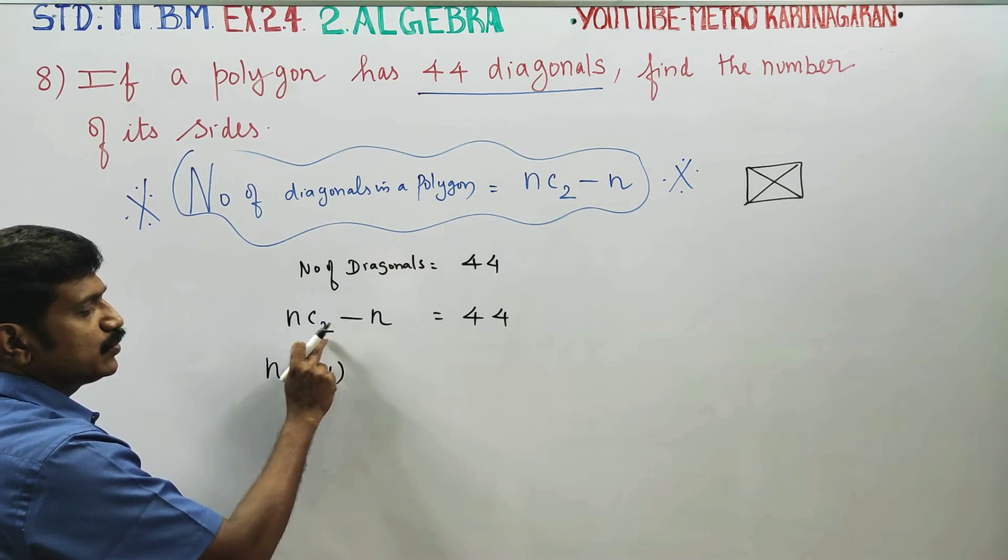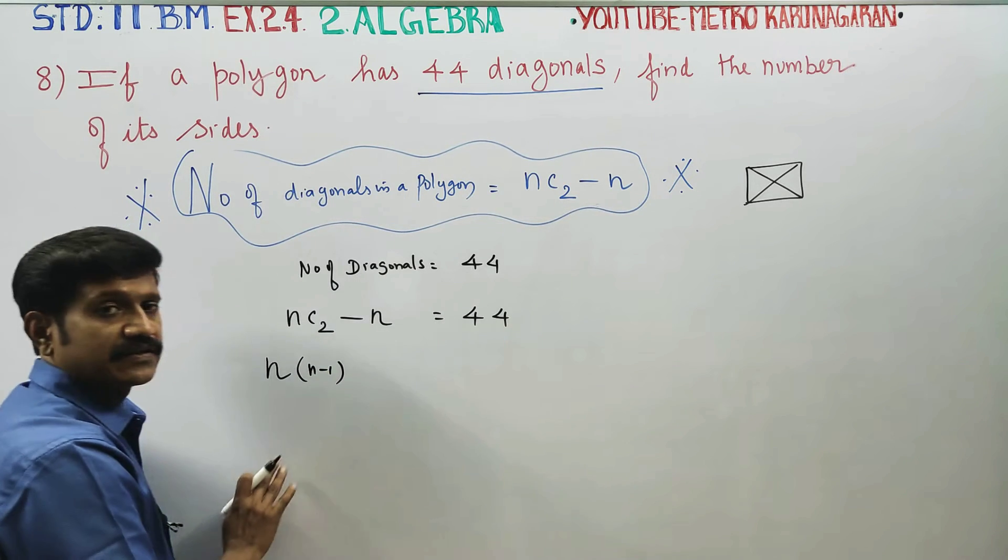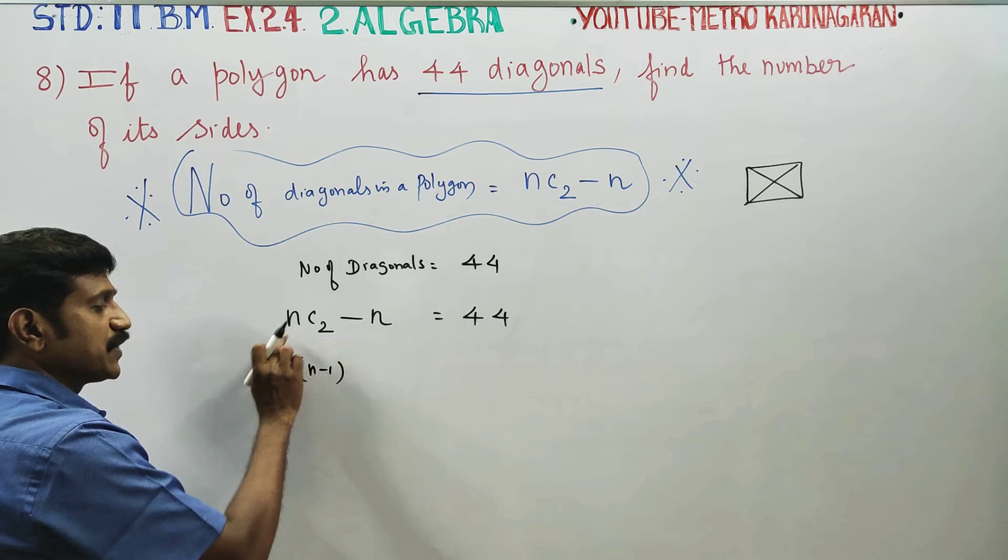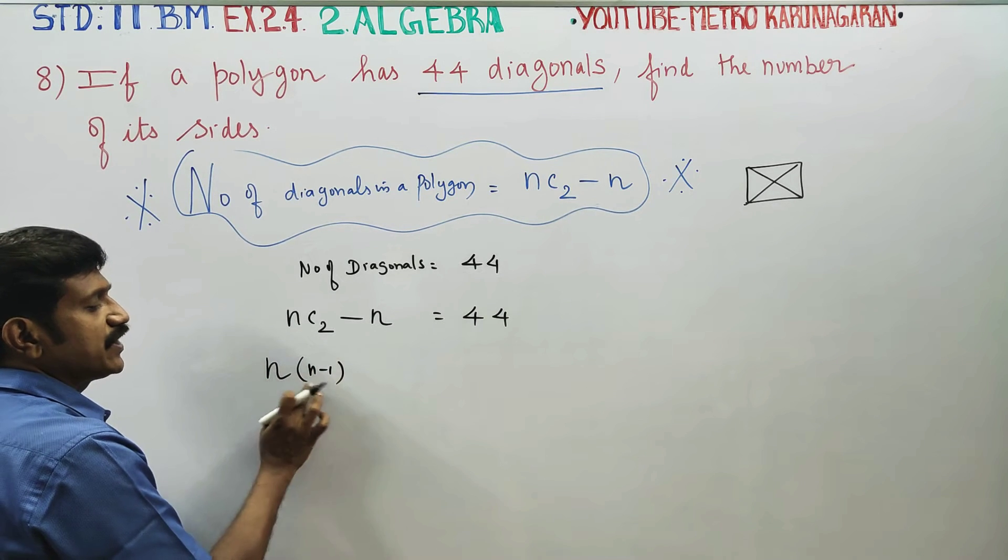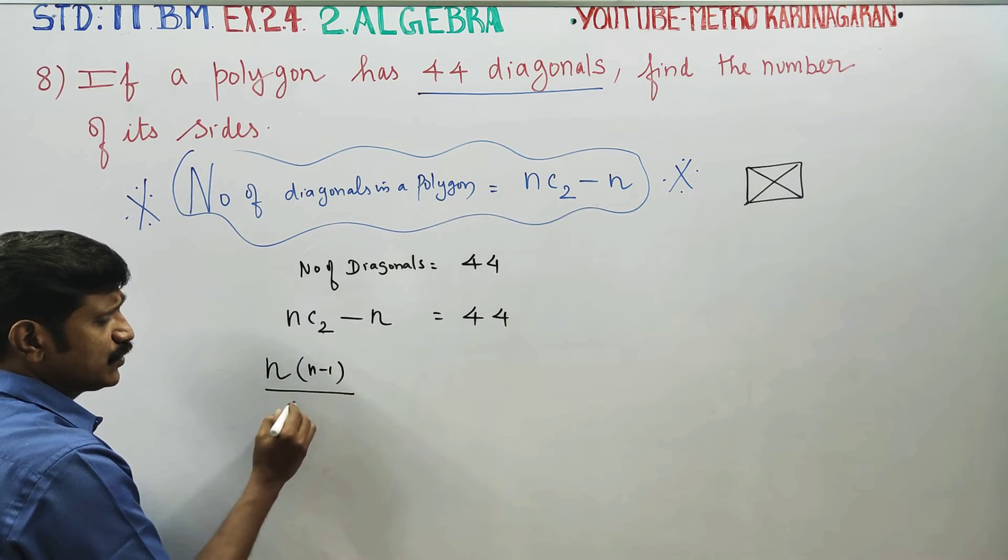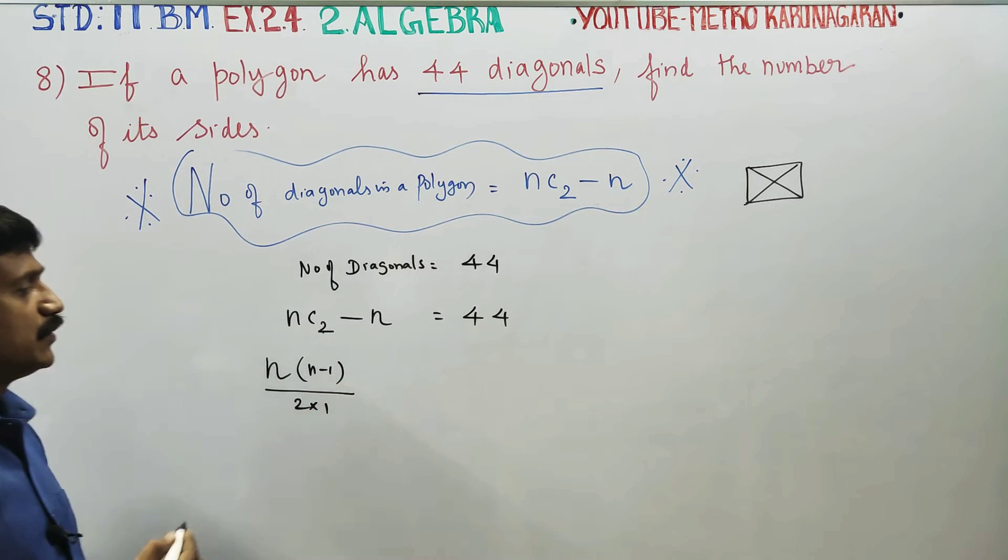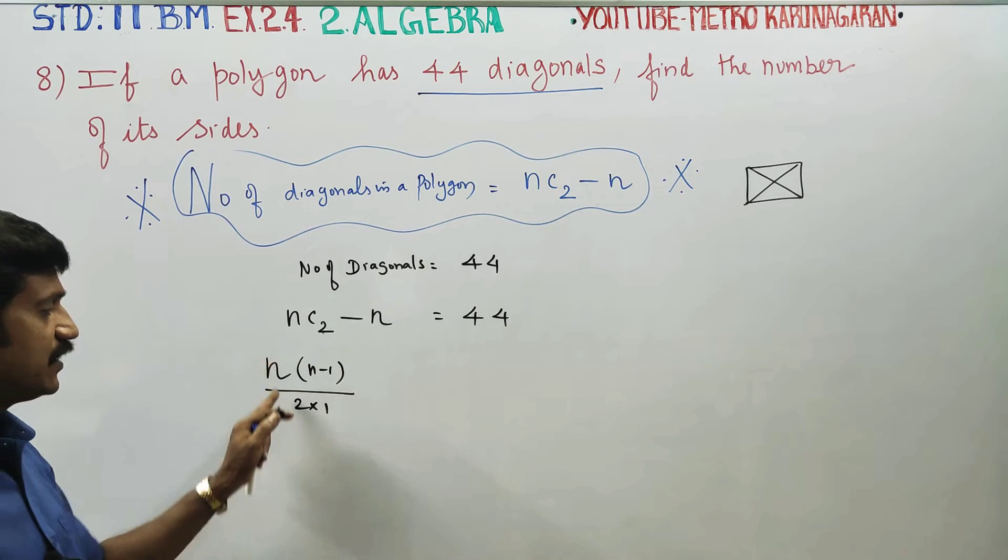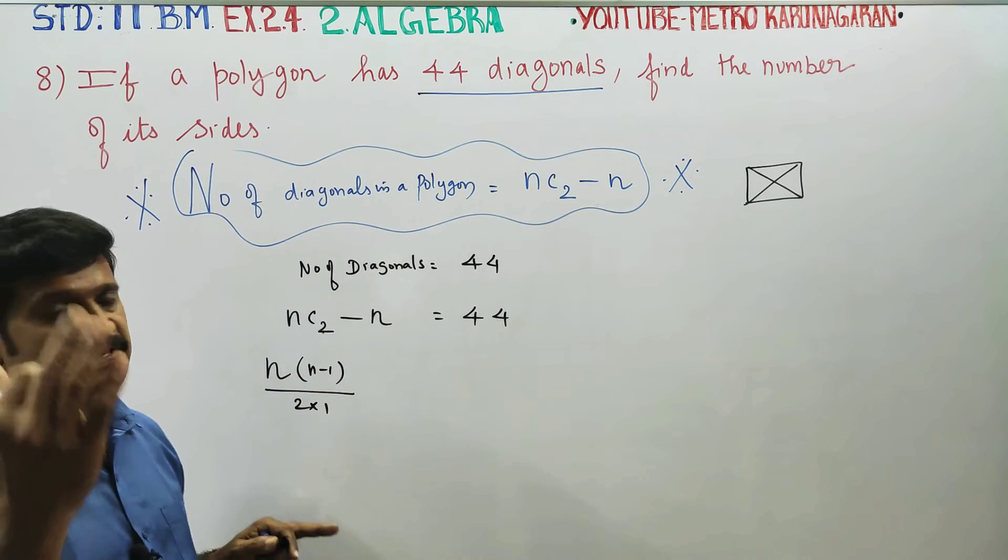nC2 is equal to n(n-1) divided by 2 factorial, which is 2 into 1. With nC3, it's n(n-1)(n-2) divided by 3 factorial.